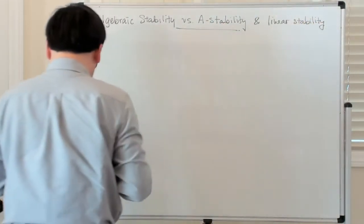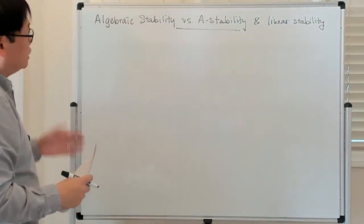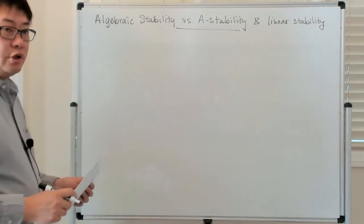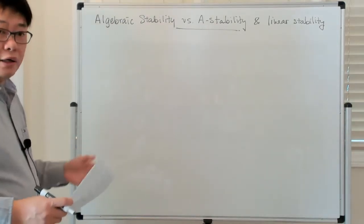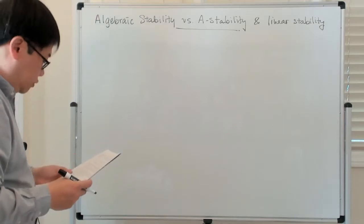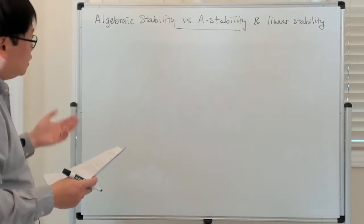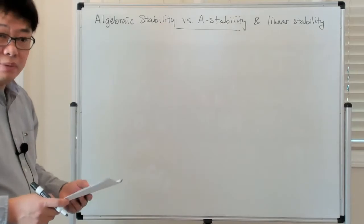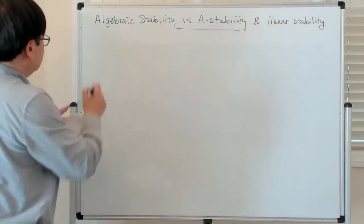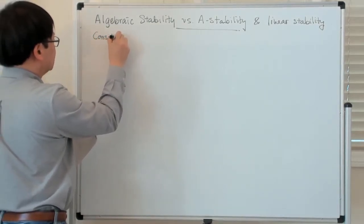So you could ask a sort of obvious question, which is: which kinds of Runge-Kutta methods are algebraically stable? And in particular, is it possible for an explicit method to be algebraically stable? So let's consider explicit Runge-Kutta methods.